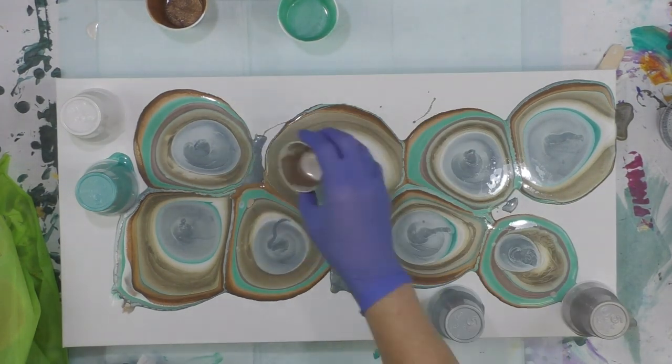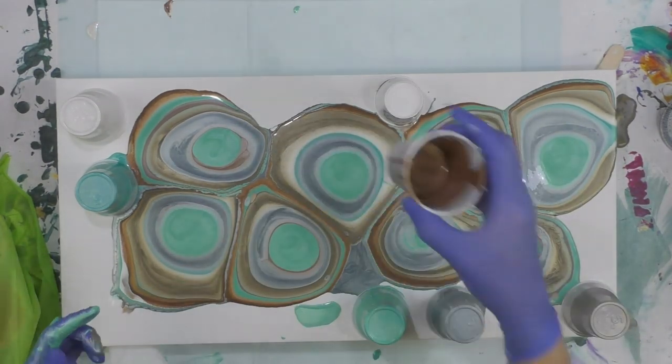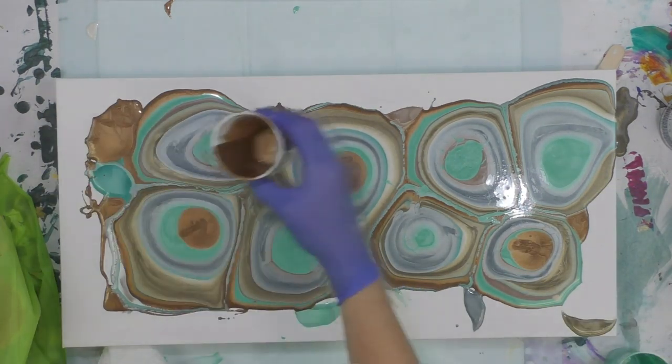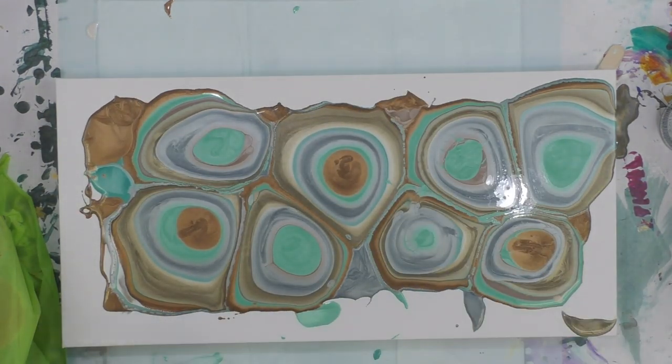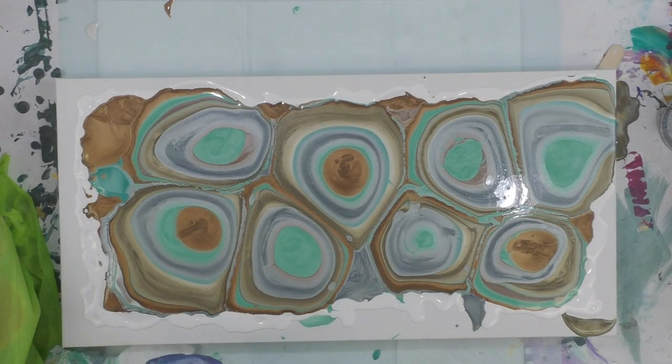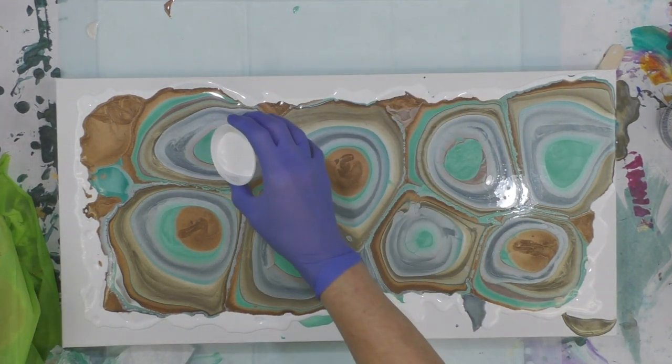They're quite lovely even just in the puddles, not even tilting yet. I think the puddles are really cool looking. You get a little different effect from a tree ring pour because it's not a continual circle. So that's the difference in a puddle pour.